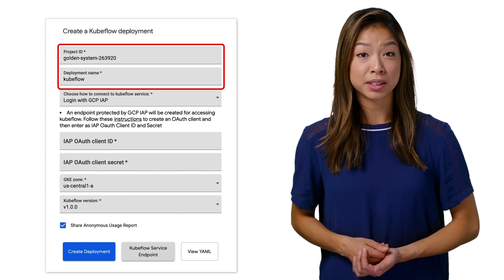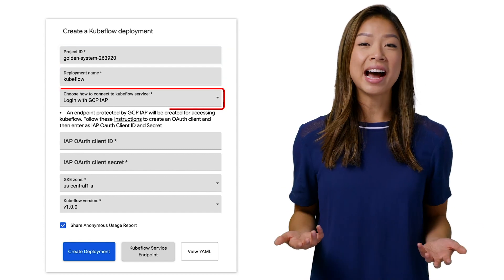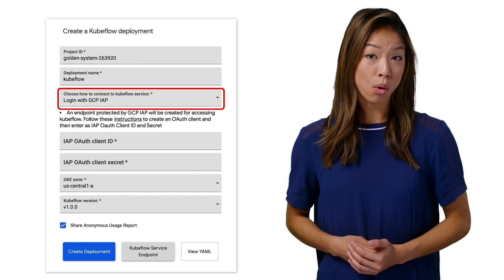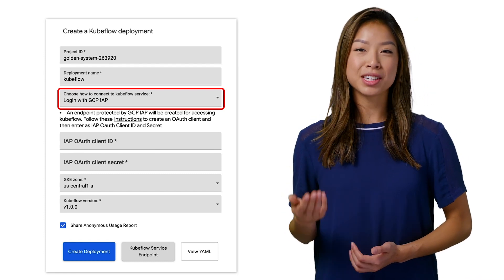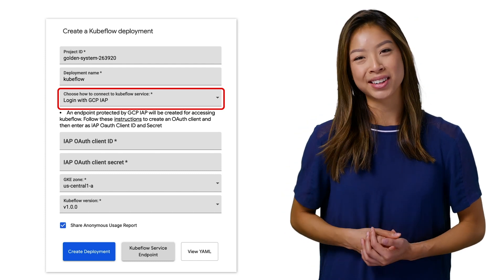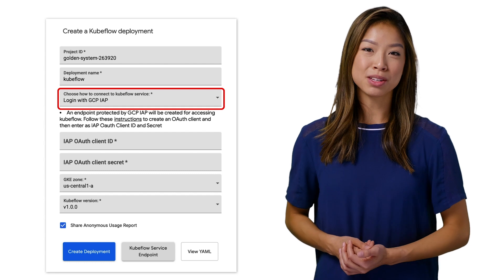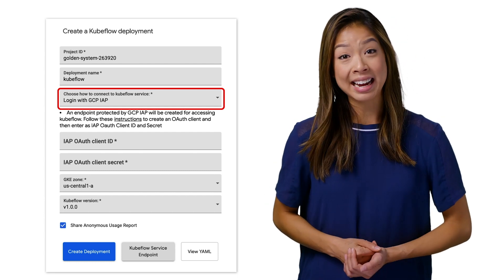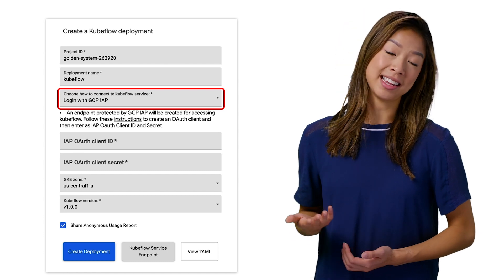There's also another option for how to connect. You can choose IAP, which stands for Identity Aware Proxy, or just choose a username and password. If you're just playing around and learning, go ahead and choose username and password to save some time. Otherwise, you'll want to use IAP for things like your production environment and to protect any sensitive data.